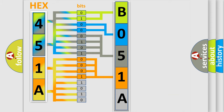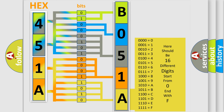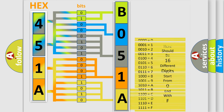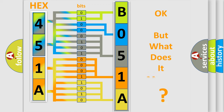A single byte conceals 256 possible combinations. We now know in what way the diagnostic tool translates the received information into a more comprehensible format. The number itself does not make sense to us if we cannot assign information about what it actually expresses.